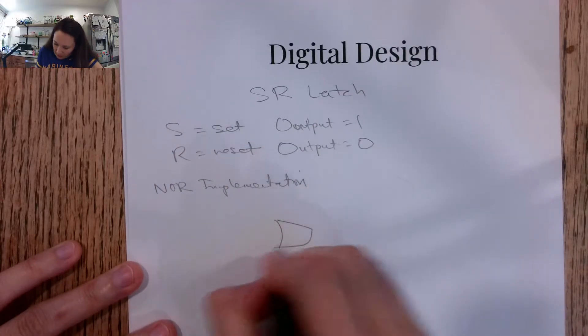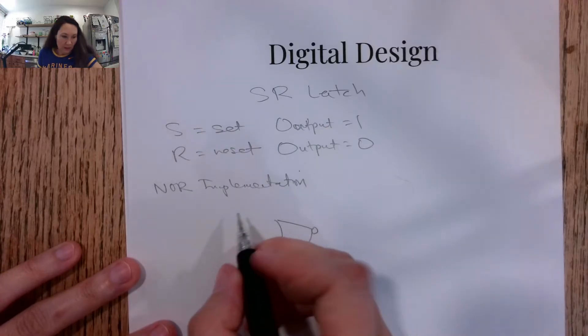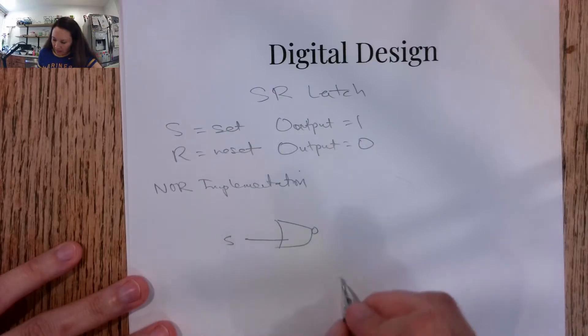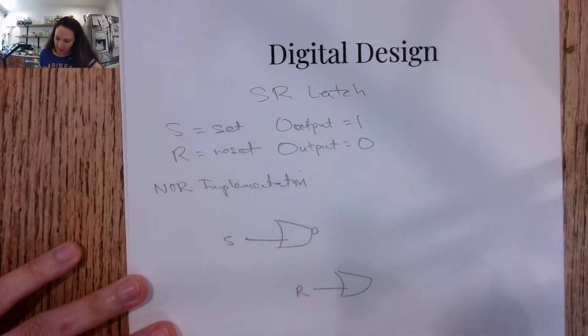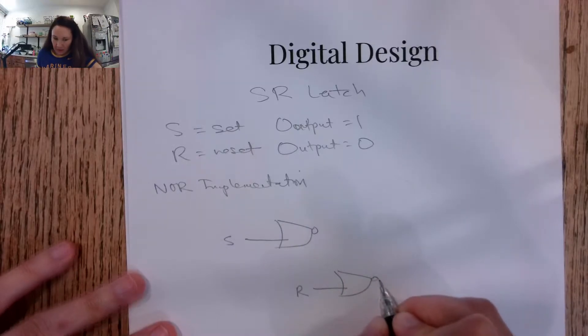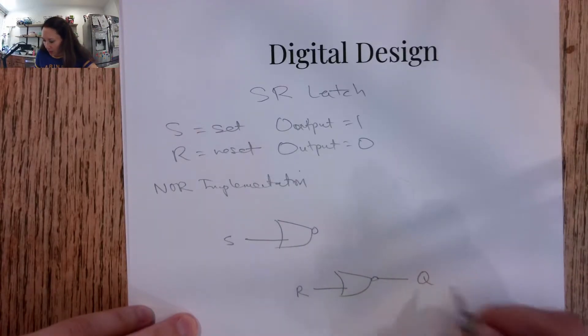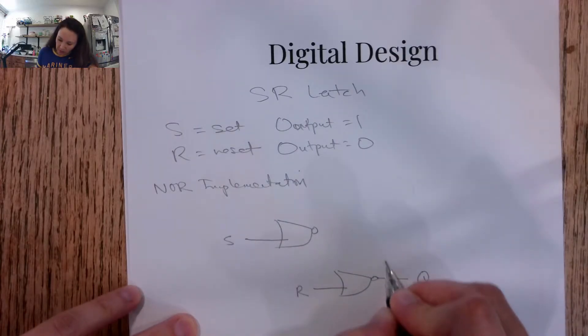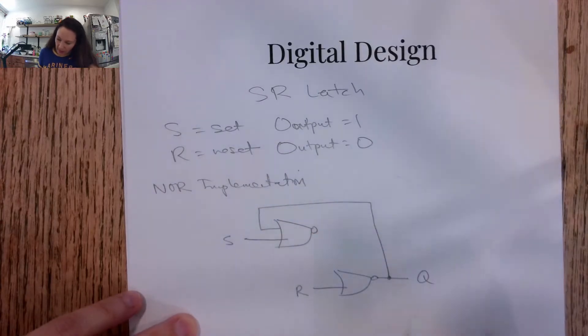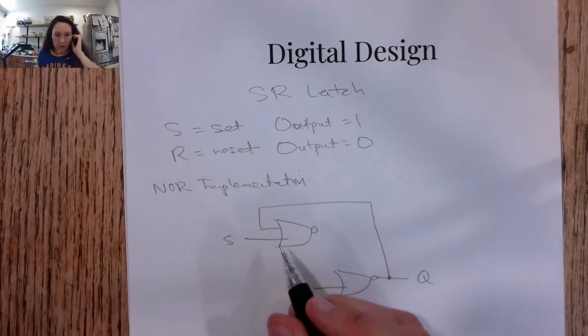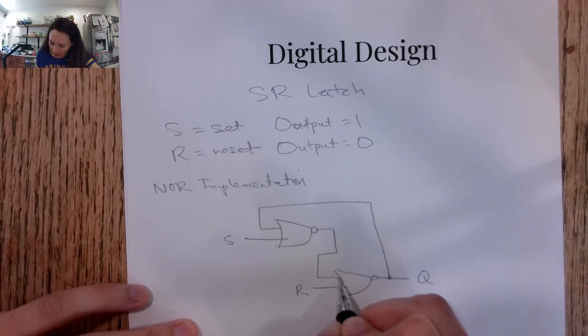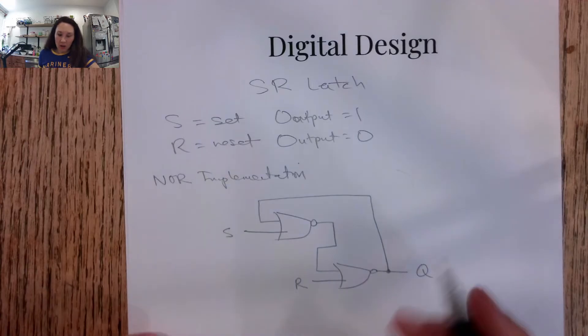We have our first NOR with an input of our set, and then the second NOR has the reset input. And then we have this feedback loop. So if this is our output, I'll call it Q, then the output from the second NOR is going to come up as input to the first NOR, and the output from the first NOR comes in as input to the second NOR.